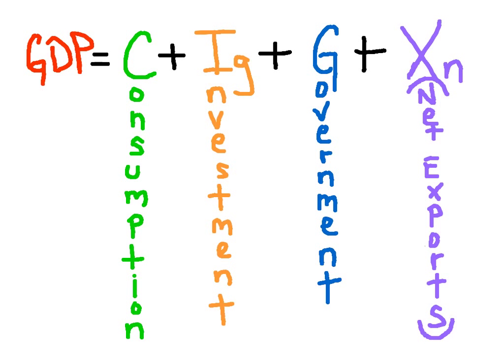Here is the expenditures formula. GDP is equal to consumption plus gross investment plus government spending plus net exports.